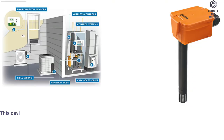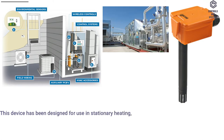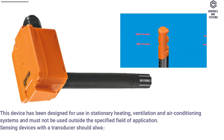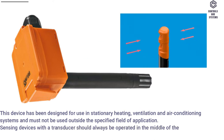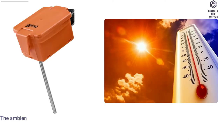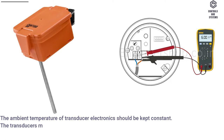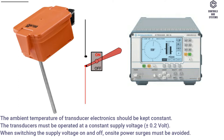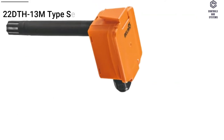Overview. This device has been designed for use in stationary heating, ventilation and air conditioning systems and must not be used outside the specified field of application. Sensing devices with a transducer should always be operated in the middle of the measuring range to avoid deviations at the measuring end points. The ambient temperature of transducer electronics should be kept constant. The transducers must be operated at a constant supply voltage of ±0.2 volt. When switching the supply voltage on and off, on-site power surges must be avoided.